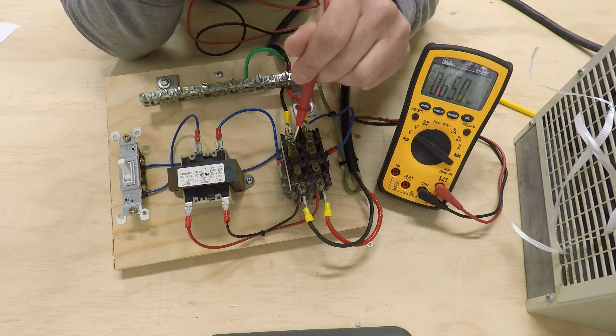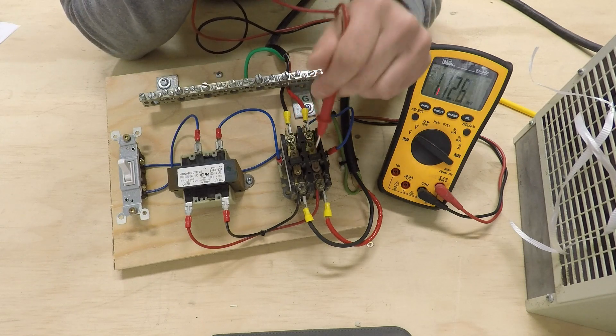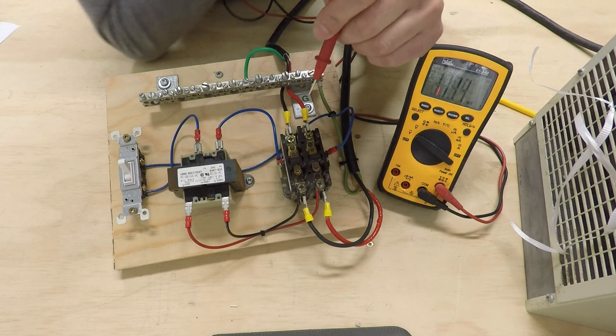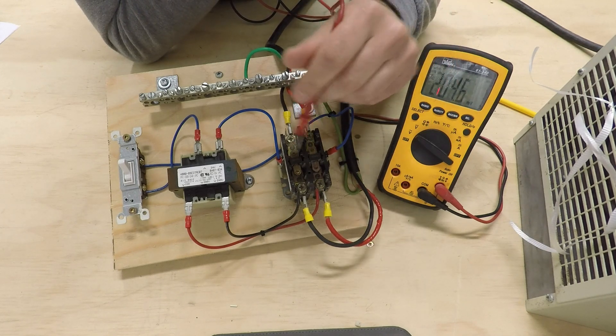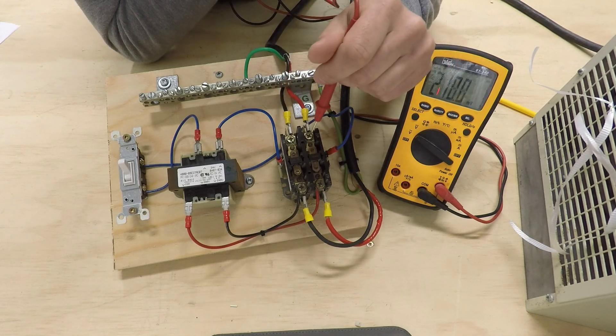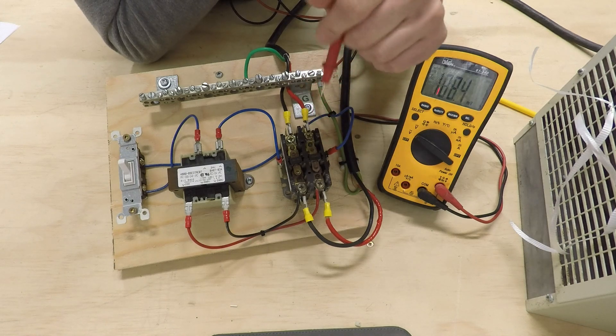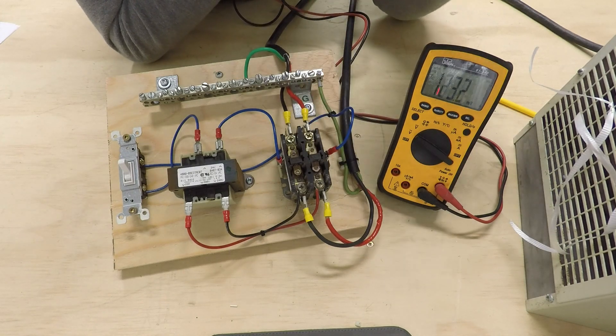So here's the issue. One of these contacts is bad on this contactor. Usually it happens when you get arcing, which causes pitting on the contact surface, or it's just carbon buildup that it's gotten to the point where it actually insulates the connection. And it's not allowing current to flow through the fan and turn it on.